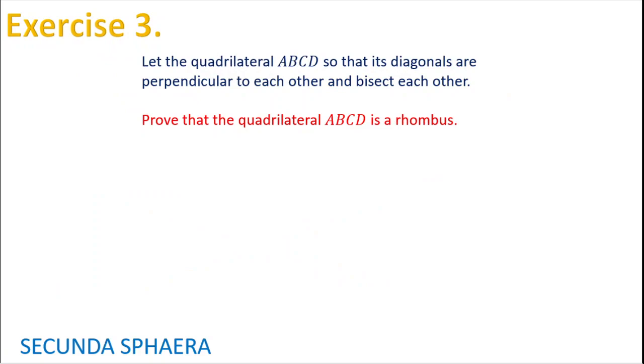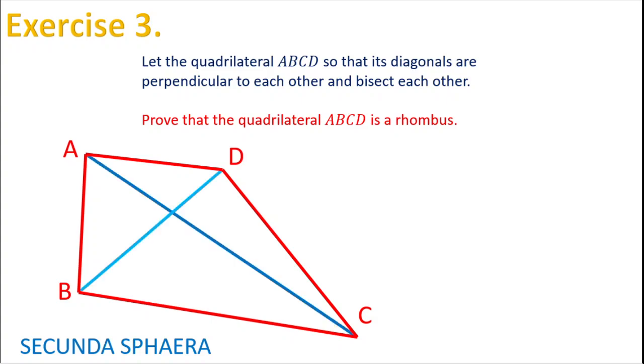Now for exercise number three. Let the quadrilateral ABCD have diagonals that are perpendicular to each other and bisect each other. Here we have the diagonals, and these diagonals are perpendicular and bisect each other.